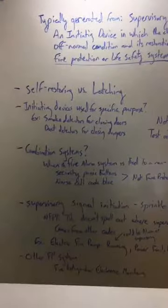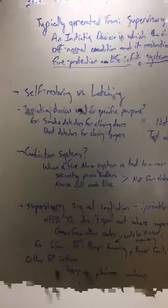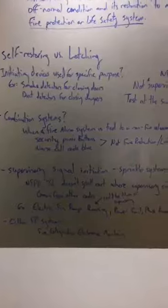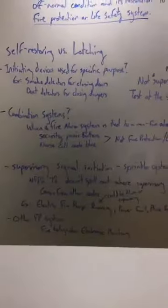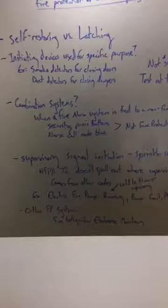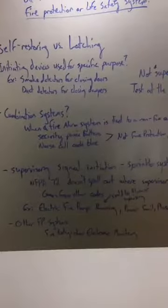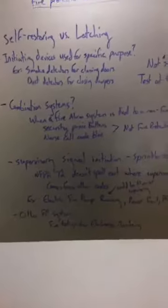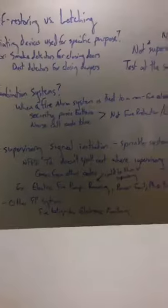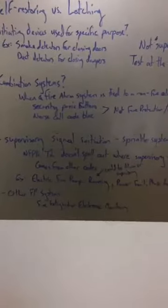And then supervisory signal initiation for sprinkler systems. NFPA 72 does not specifically spell out where supervisory signal initiating devices are required for sprinkler systems. This comes from other codes. So NFPA 101, NFPA 20 will tell you. So you need to know when your system was installed and reference the appropriate code of what's required. Older systems, like one of our hospitals has a 40-year-old electric fire pump. We don't have any supervisory signals on it. We don't have running, fire pump running, power failure,